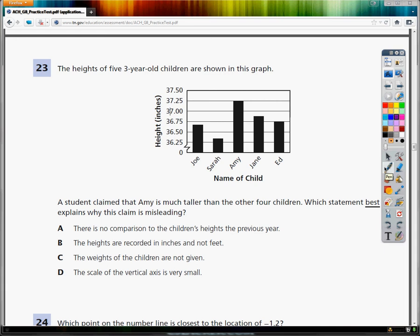The student says that Amy, which is this one, is much taller than the rest. And based on the visual, that seems reasonably true. So we're going to look at the answer choices and see why that may not be as true as we think it is.